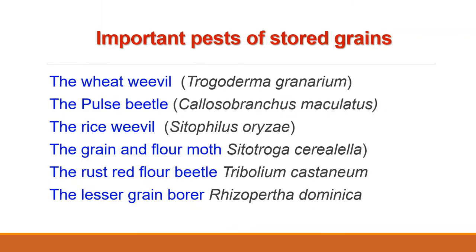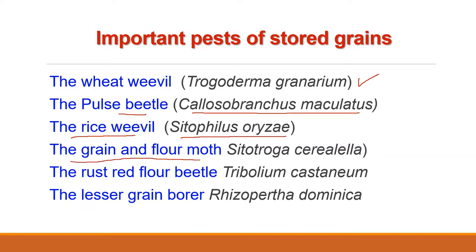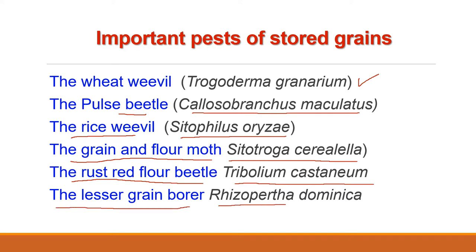The important pests of stored grain which we are going to study today are: the wheat weevil, zoological name Trogoderma granarium; the pulse beetle, Callosobruchus maculatus; the rice weevil, Sitophilus oryzae; the grain and flour moth, Sitotroga cerealella; the rust red flour beetle, Tribolium castaneum; and the lesser grain borer, Rhyzopertha dominica.